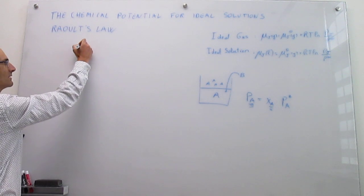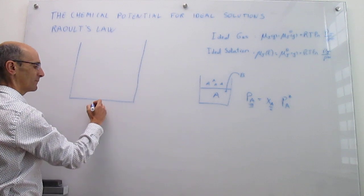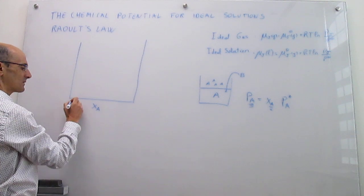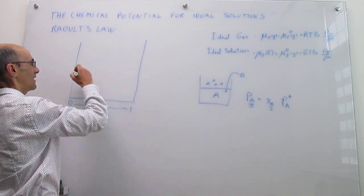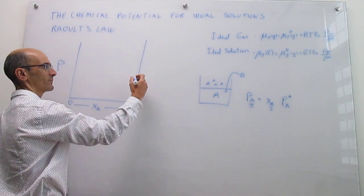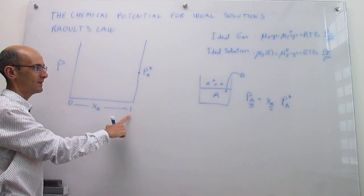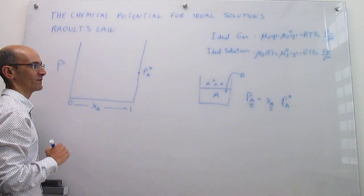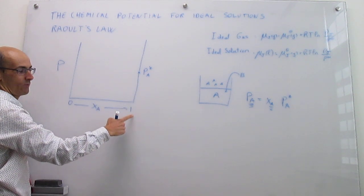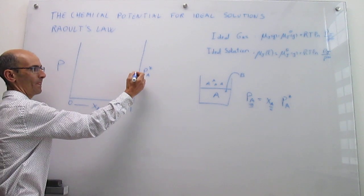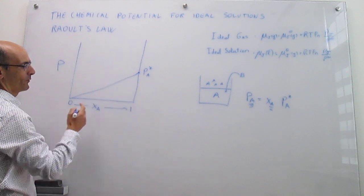Let's represent Raoult's law graphically for the two components, A and B. We're going to plot on the x-axis the mole fraction of A in the liquid, running from 0 to 1. On the y-axis, which is the vapor pressure or partial pressure — if you have pure A at mole fraction 1, that means there's no B present, and the pressure has to be the vapor pressure of A when pure. In the rest of the concentration range, as you start to add B and the mole fraction goes from 1 all the way to 0, that relationship is linear. So there should be a straight line connecting 0 with that point.